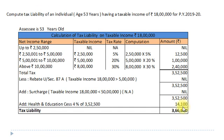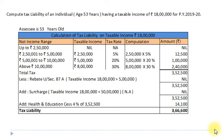Final total tax liability amounts to Rs. 3,66,600. That's all. Dear students, thank you very much for watching this video lecture. Very soon we will meet with another example in the same chapter.